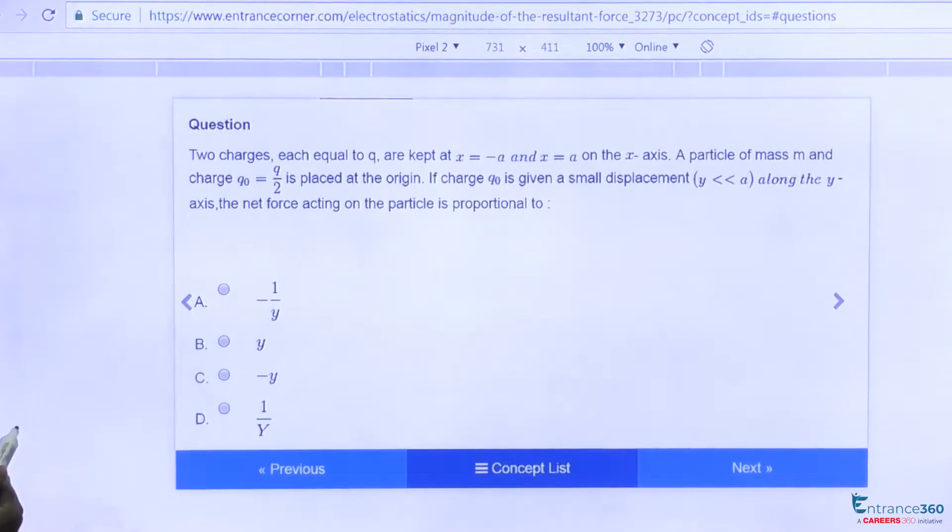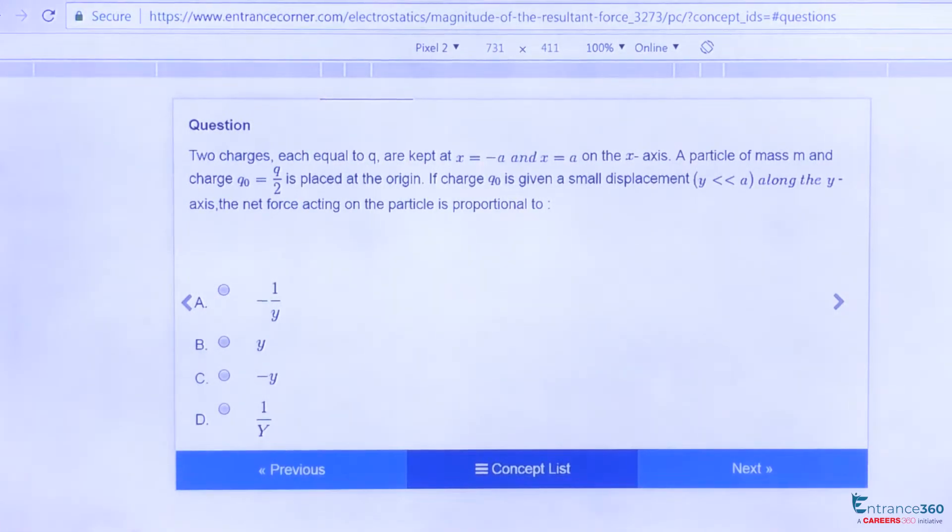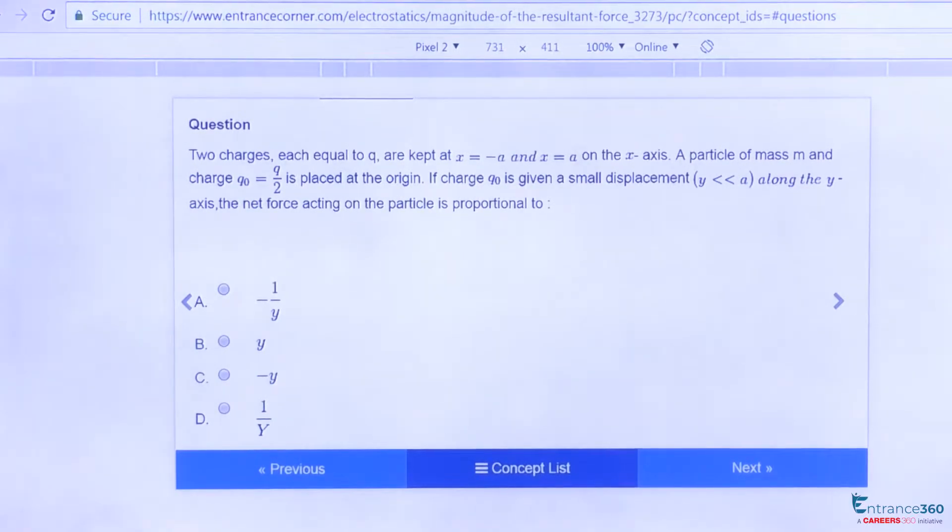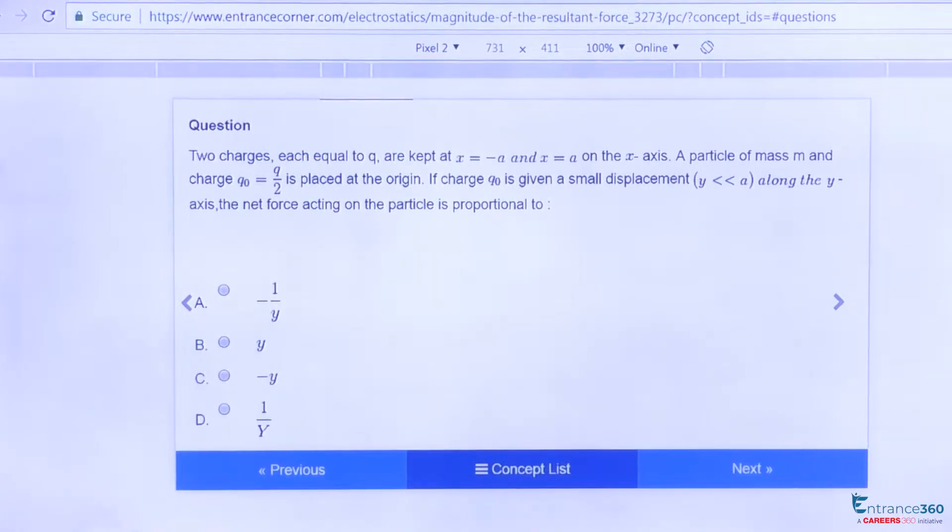The question says we have two charges q placed at -a and a on the x-axis, and another charge q/2 is placed at the origin, which is moved along the y-axis by a distance y, where y is very very less than a.